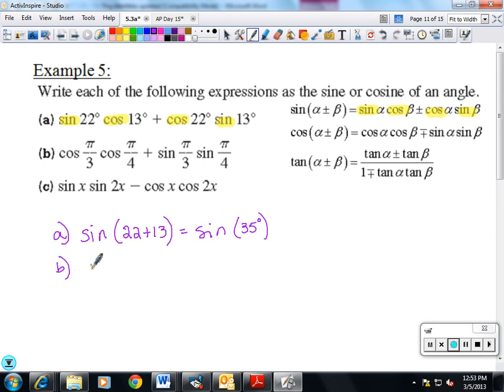On your homework, some of them say simplify. That's what it's wanting. If it says evaluate, it wants you to go ahead and pull the angle off the circle. This one's cosine, cosine, sine, sine. So that's going to be a cosine here. It's a plus. Cosine flip-flop sines. So it's going to be cosine of pi over 3 minus pi over 4. You can leave it like that.